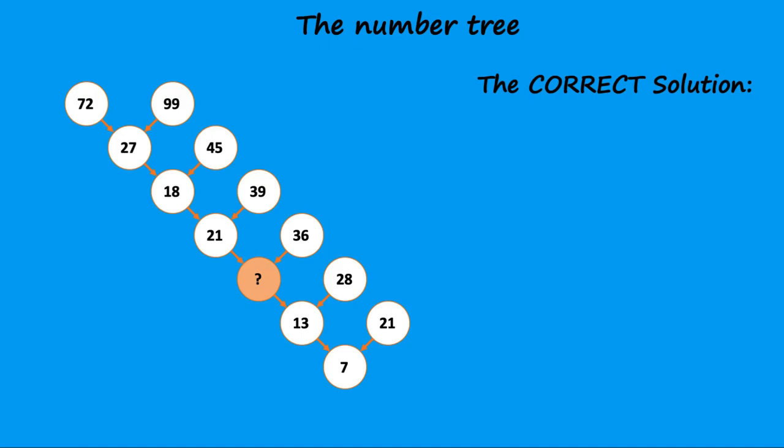You can break each number into sub-numbers. For example, 99 can be broken into 9 and 9. 72 can be broken into 7 and 2. Adding these 4 numbers gives us the solution of 27.